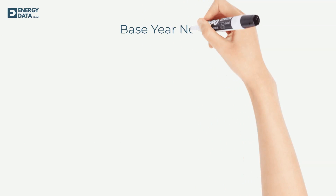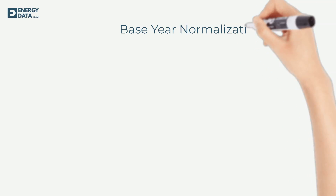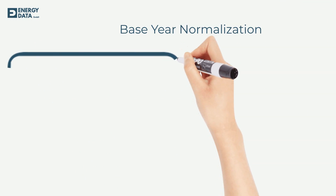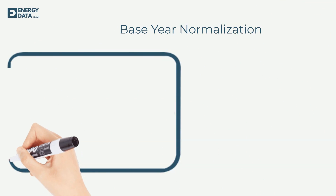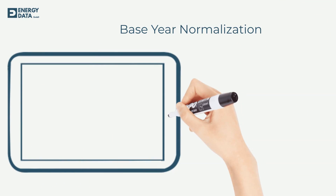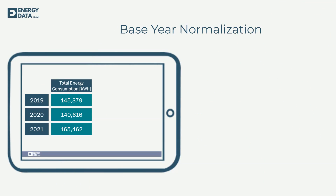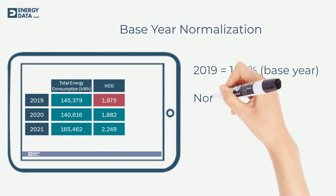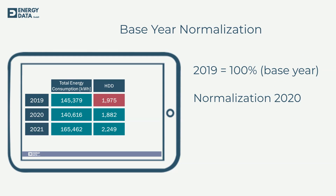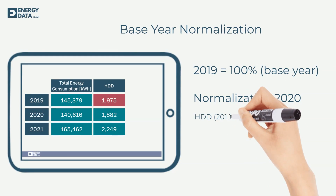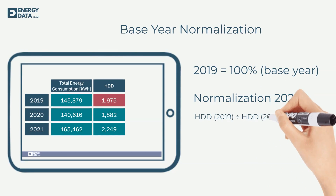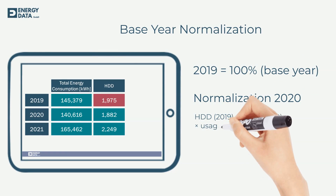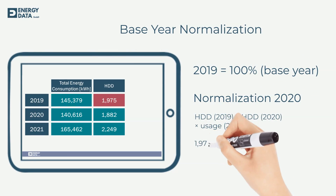The last approach is very similar and called base year normalization. Instead of using long-term average values for correction, you can set a base year and compare the number of degree days and the energy usage to that year.